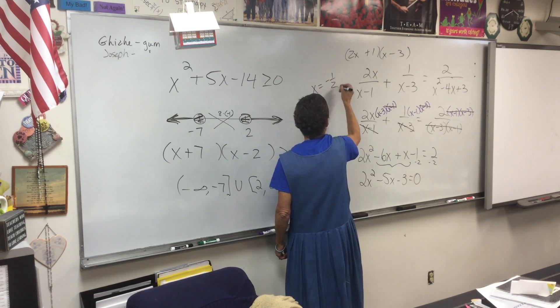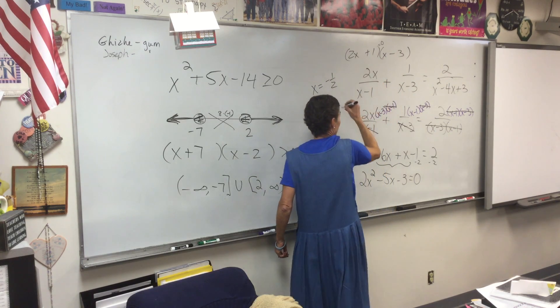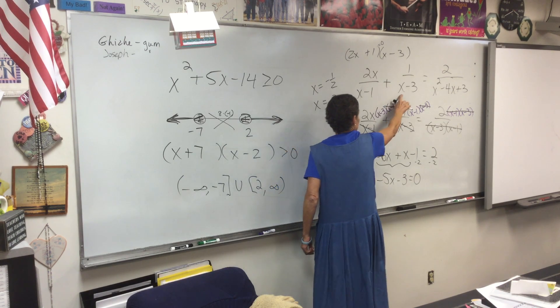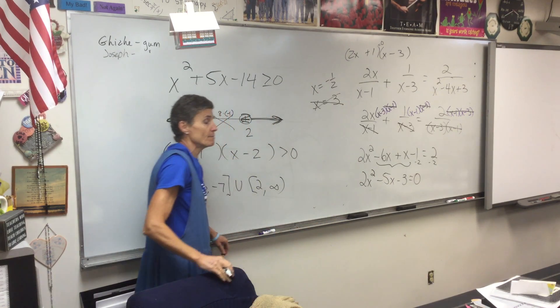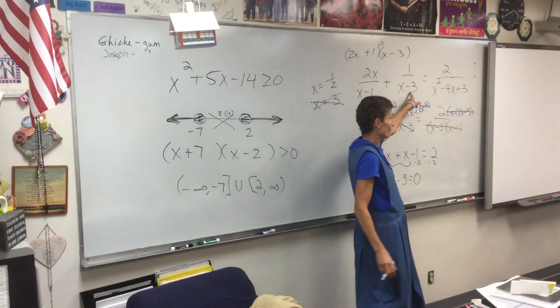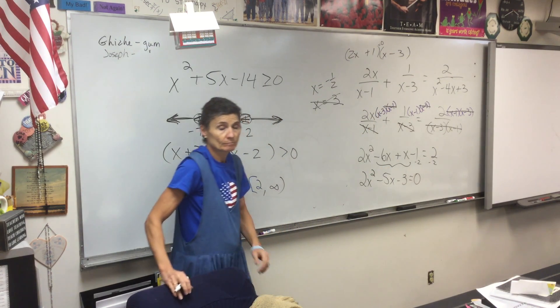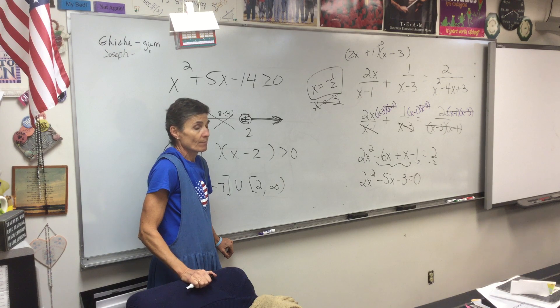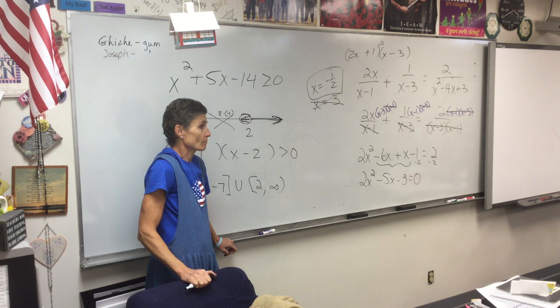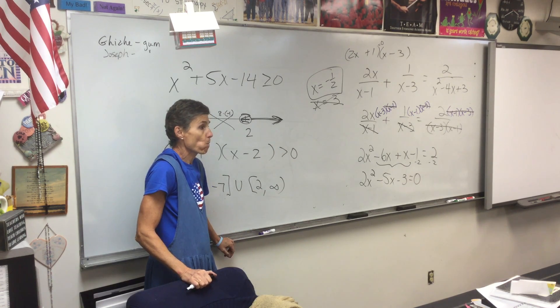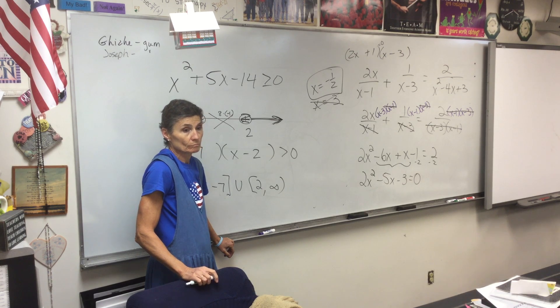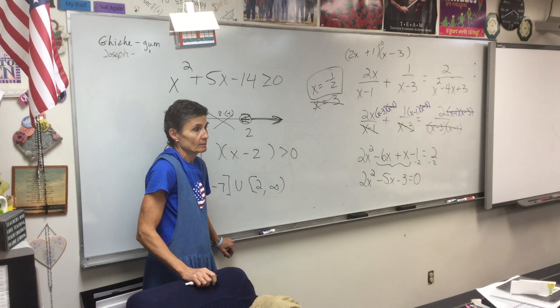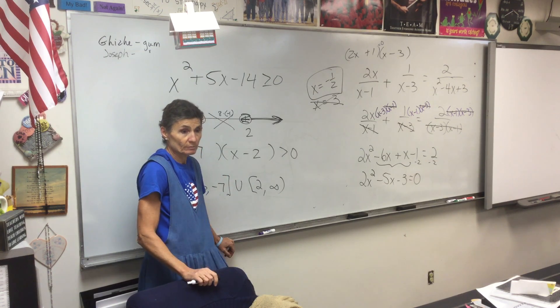So what are my answers? X equals negative one-half, because I set this equal to 0 and solve it. Or x equals 3. Wait a minute, can't be 3. Can't be 3 because if x were 3, you'd have a 0 down here and you can't. So the only answer to the problem is negative one-half. Set each factor equal to zero and solve it. Two x plus one equal to zero, add one and divide by two. That's how we got one-half.